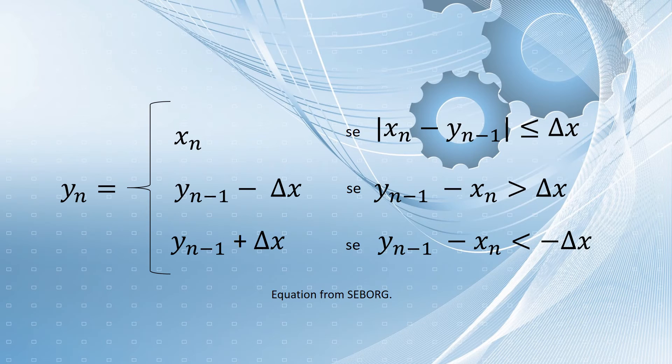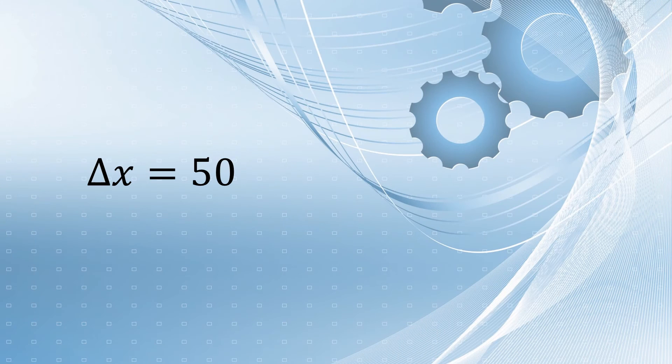If a large change in the measurement occurs, the filter replaces the measurement by the previous filter output plus or minus the maximum allowable change. In this case, the delta x is 50.